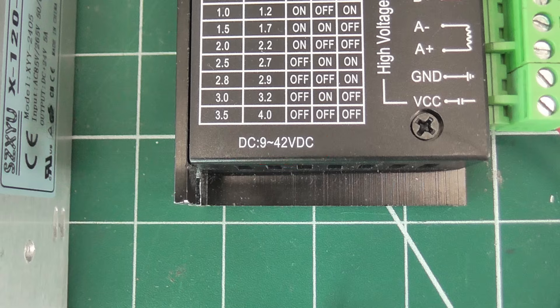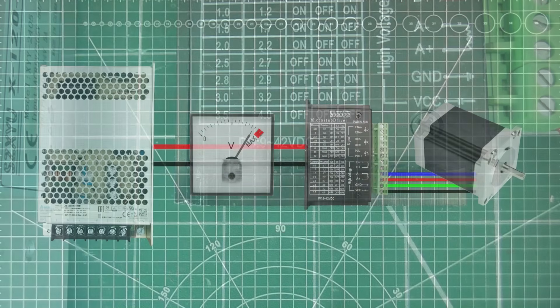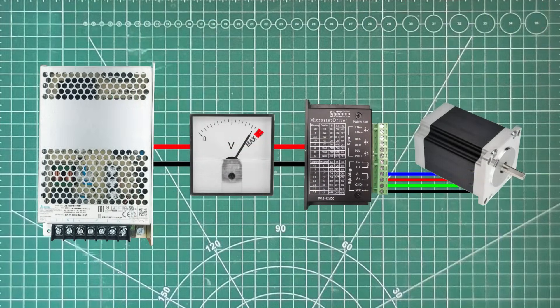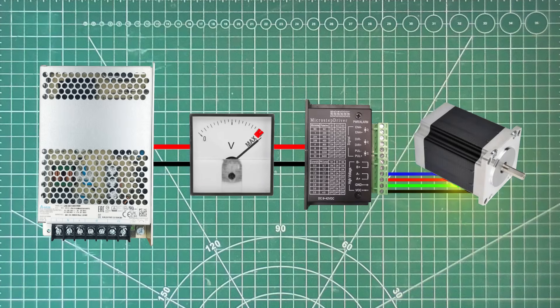But it's important not to go too close to the maximum. A small safety margin is needed, since in some situations, such as decelerating a large load, the motor can act as a generator, pushing power back to the driver and raising the supply voltage. Exceeding the maximum voltage could cause the driver to shut down.